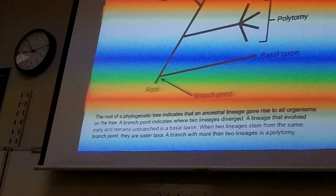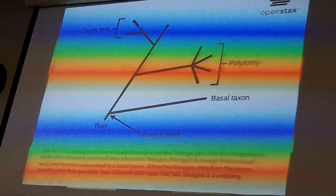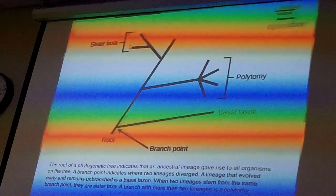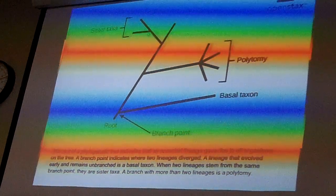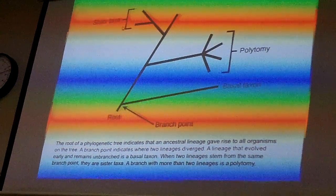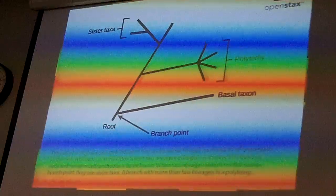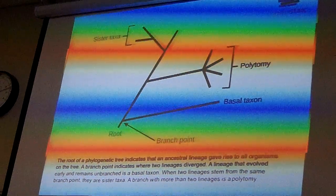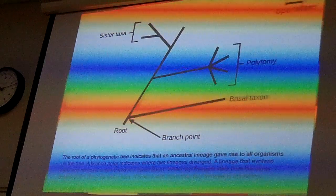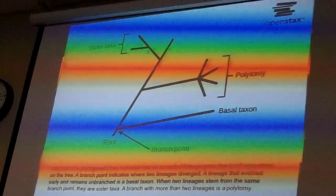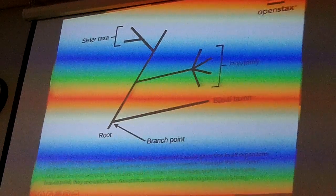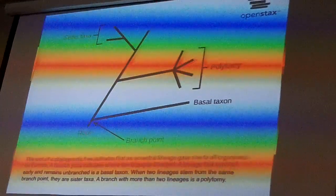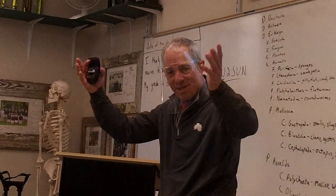Two branches coming off the same line are called sister taxa. For instance, humans and chimpanzees are sister taxa — they share a common ancestor that goes back about seven million years. It doesn't mean humans evolved from chimps or chimps from humans; they share a common ancestor that could have been different from both, probably with traits of each.